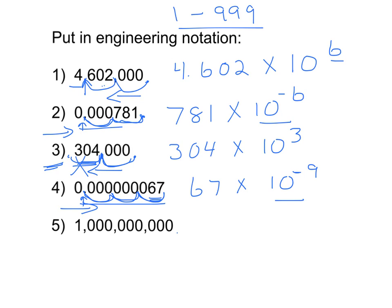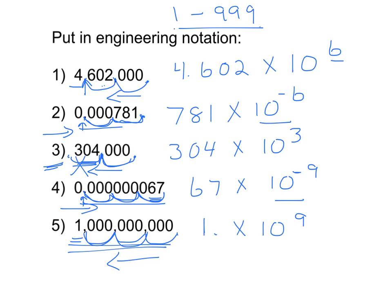For number five, my decimal starts after that last zero. I'm going to move it in groups of three: one, two, three, four, five, six, seven, eight, nine. When I move it nine places, I'm left with just a one in front of the decimal. I need something between one and 999 inclusive, so one will work. So one times 10 to the nine. I moved it to the left, so it's positive because I want to multiply it by a really big number.